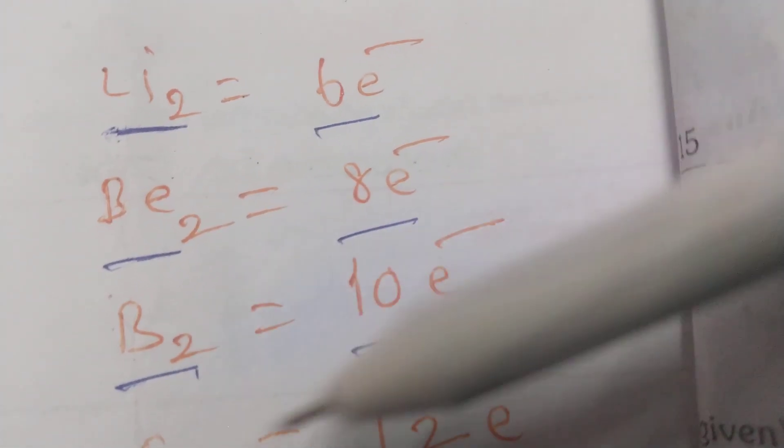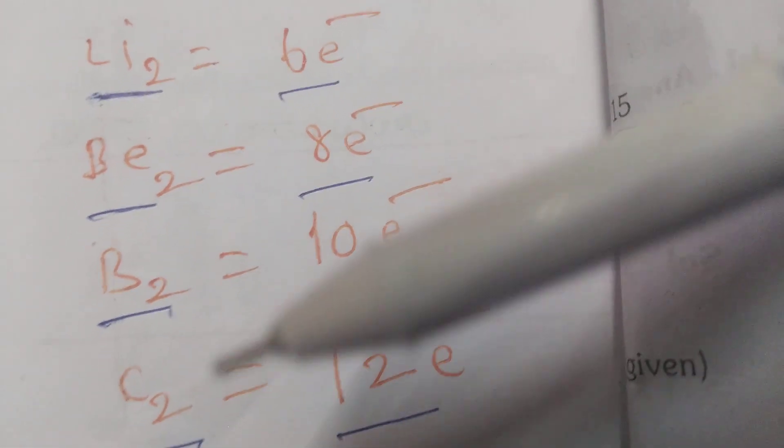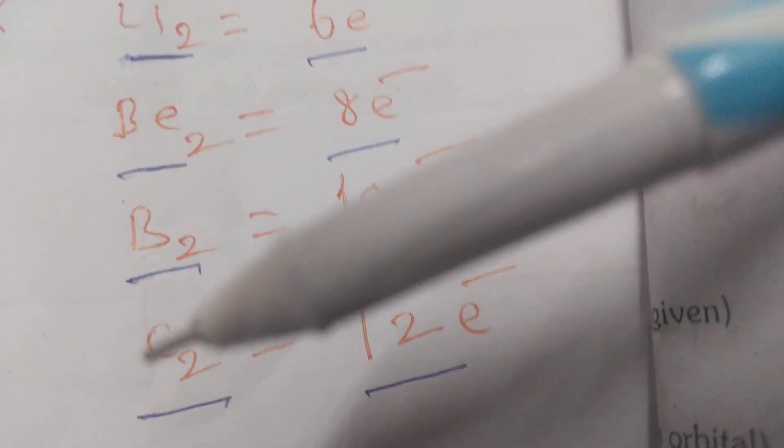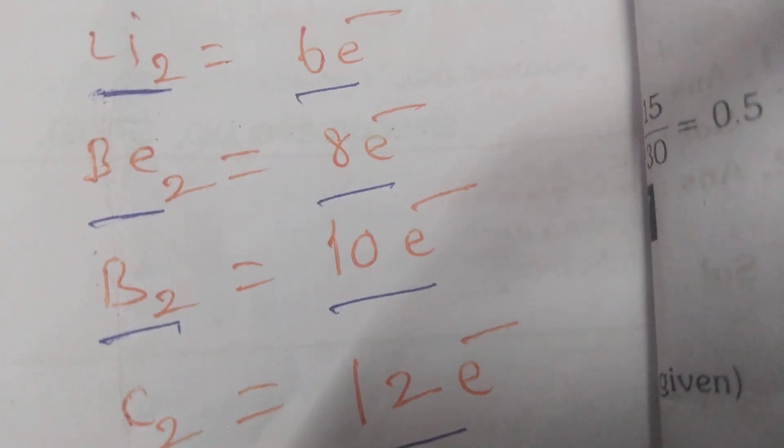Boron atomic number 5, 5 times 2, 10 electrons are there. Carbon atomic number 6, 6 times 2, 12 electrons are there.